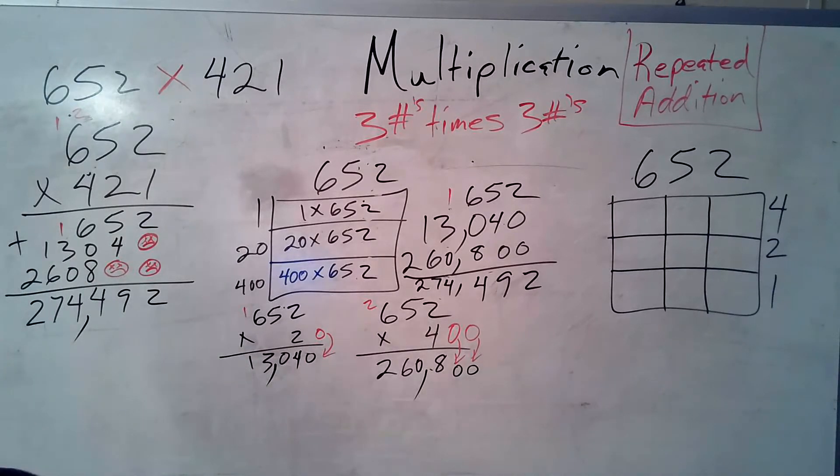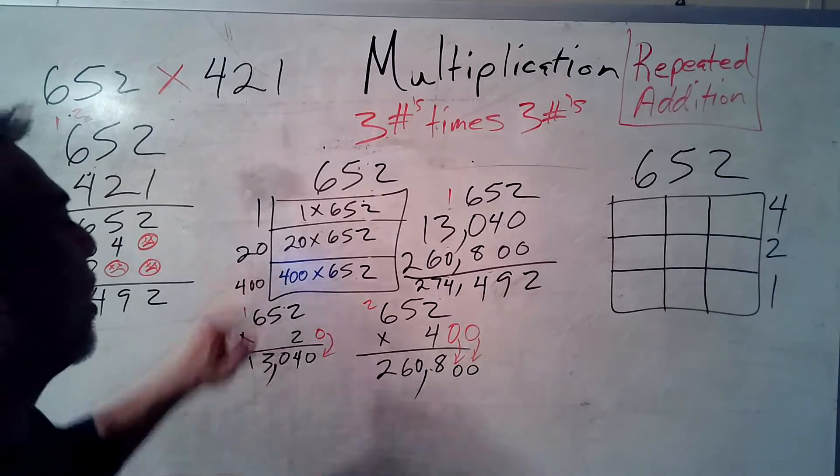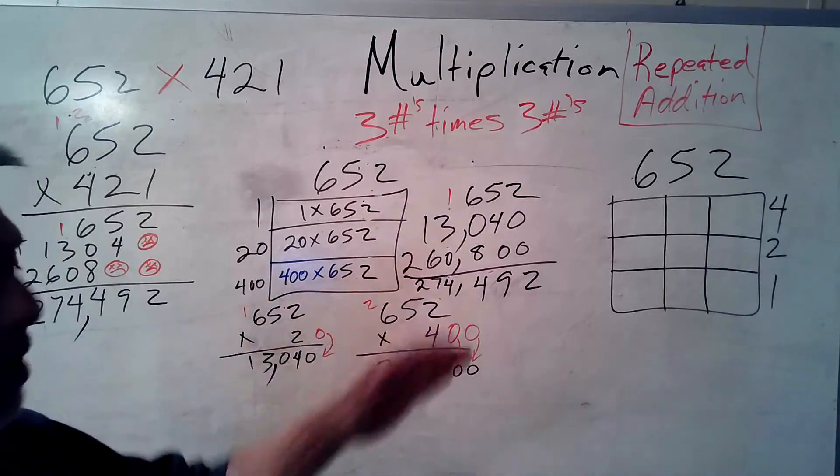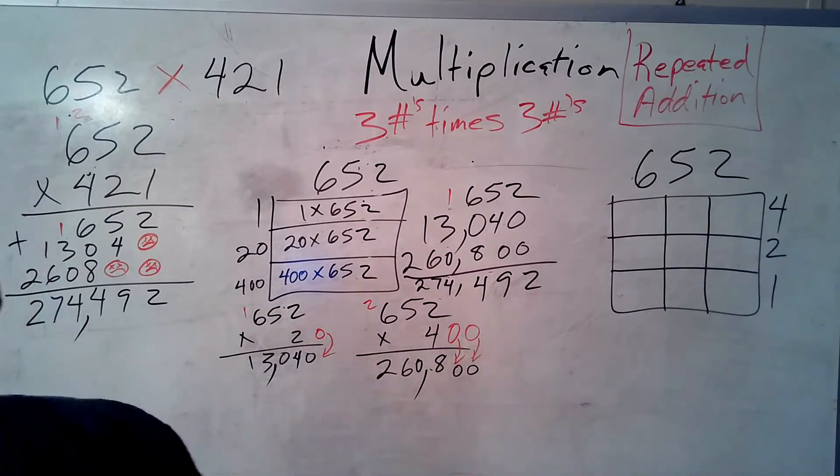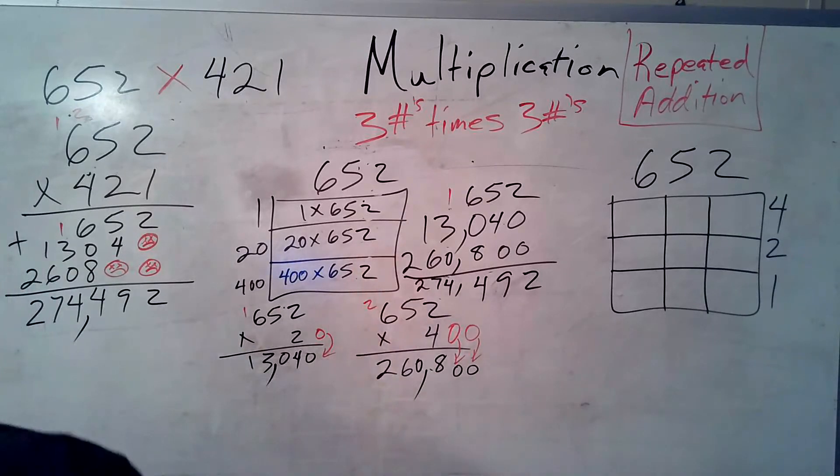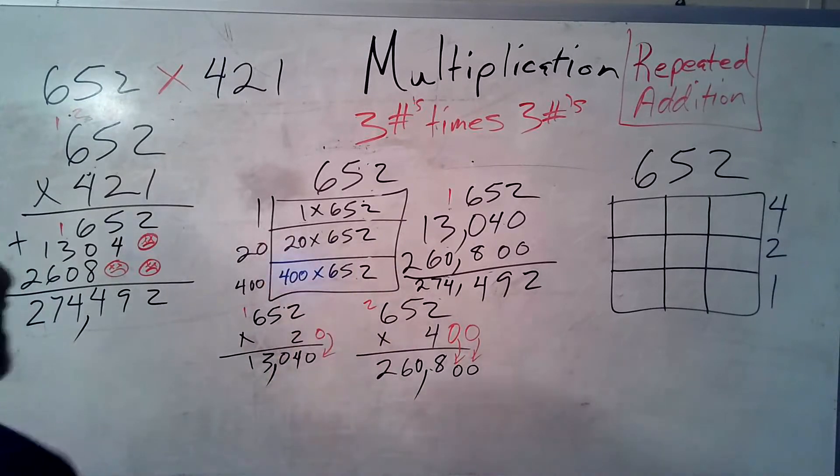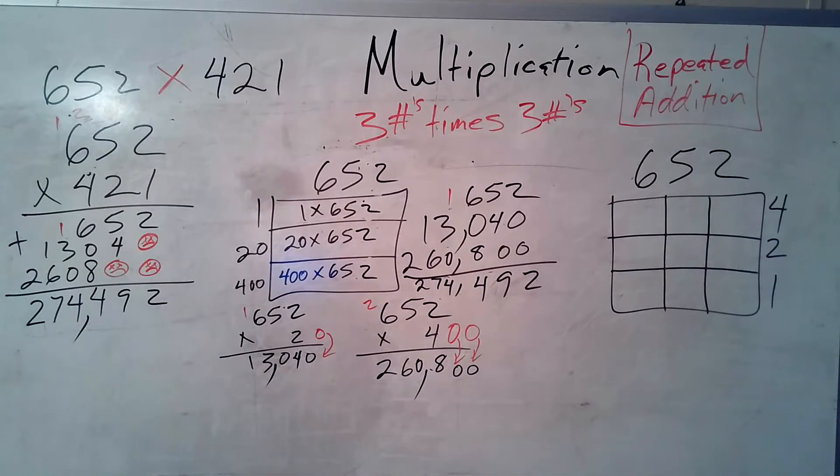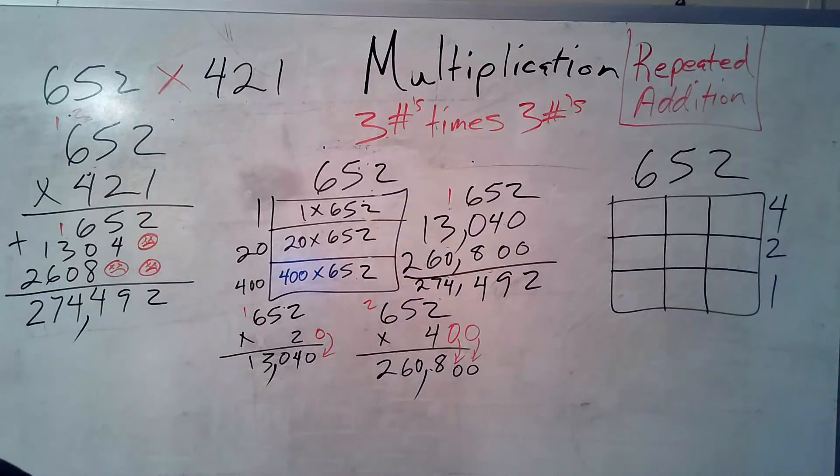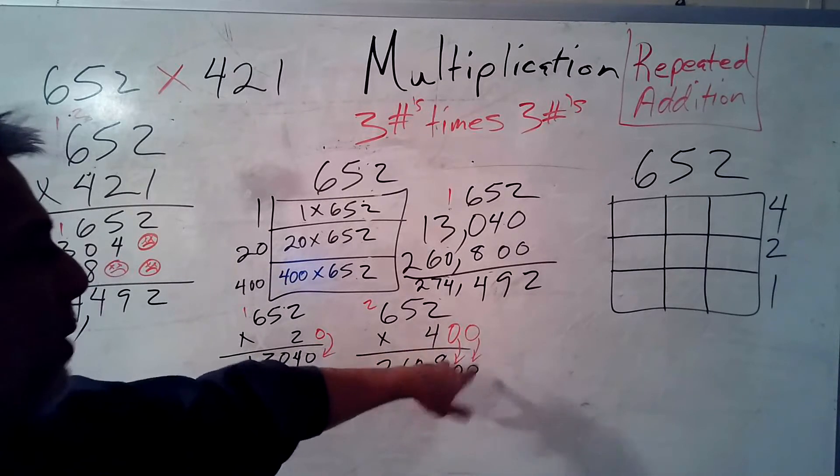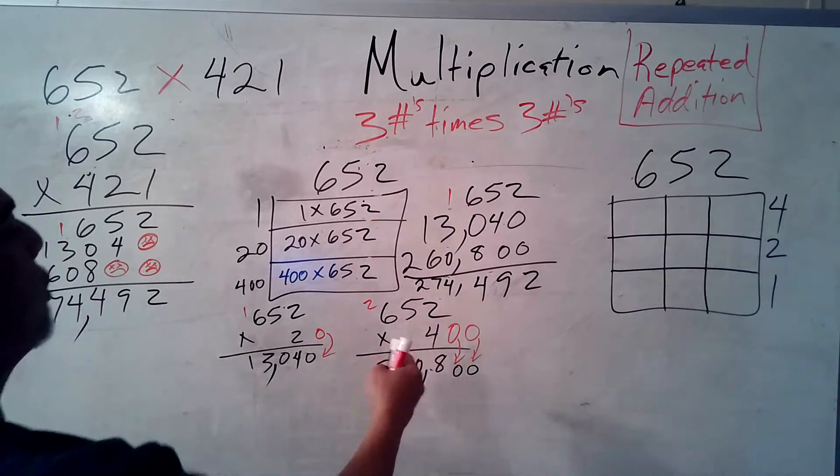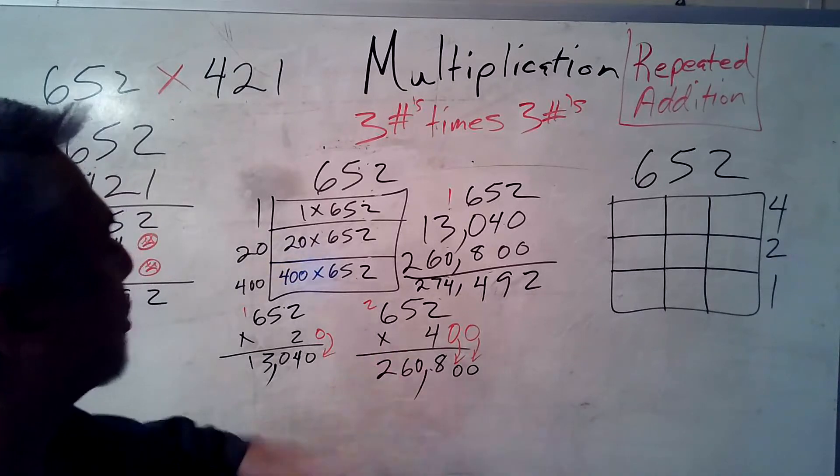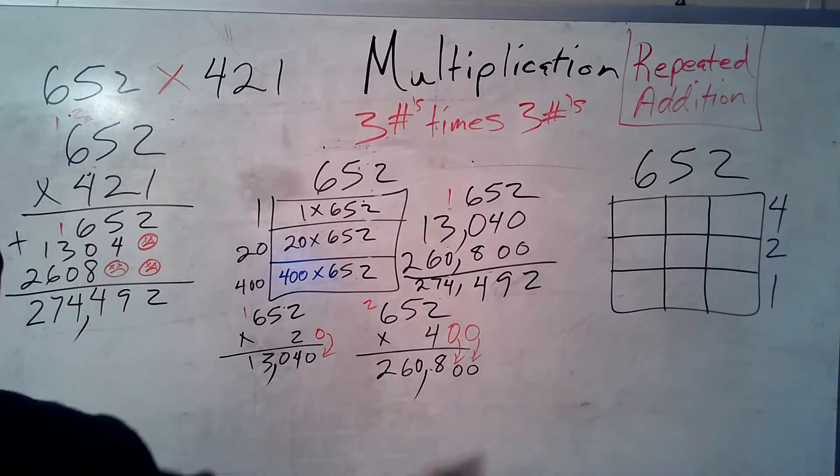But wait, there's more. Yep, 400. So I'm going to break off those 0s. That's why I put them there in red. 4 times 2 is 8. 4 times 5 is 20. Write down the zero. Carry the 2. 4 times 6 is 24. 24 plus 2 is 26. Hold up. Don't forget to bring your 0s to the party. That's 260,800.